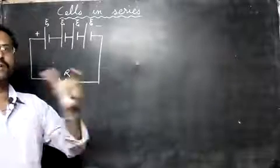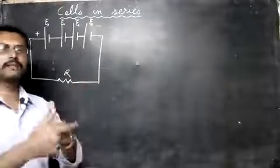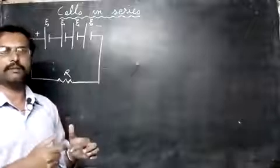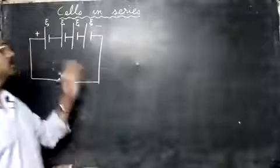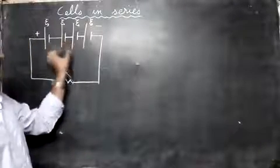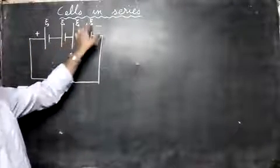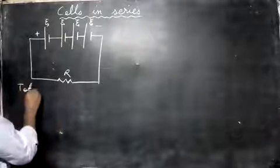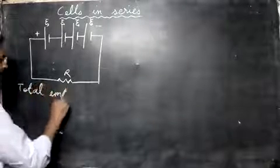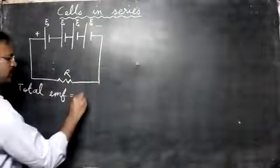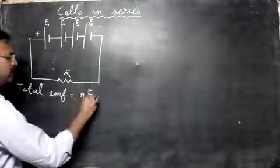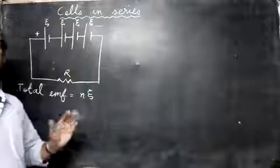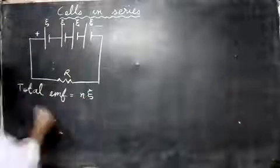Each cell has 1.5 volts, so if you have two cells the voltage becomes three volts — they simply add up. So we can say the total EMF is equal to n times the individual EMF, ε. The total EMF equals n times ε.